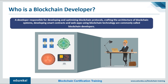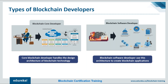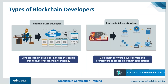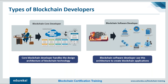Now let's go through the types of blockchain developers. There are two major types: core blockchain developers and blockchain software developers. Core blockchain developers are involved in developing the architecture for blockchain networks and dealing with different protocols and design features. Blockchain software developers use the architecture designed by core blockchain developers to build decentralized applications. This is comparable to core web developers building protocols like HTTP and SSL, while web developers build applications on top of that architecture.